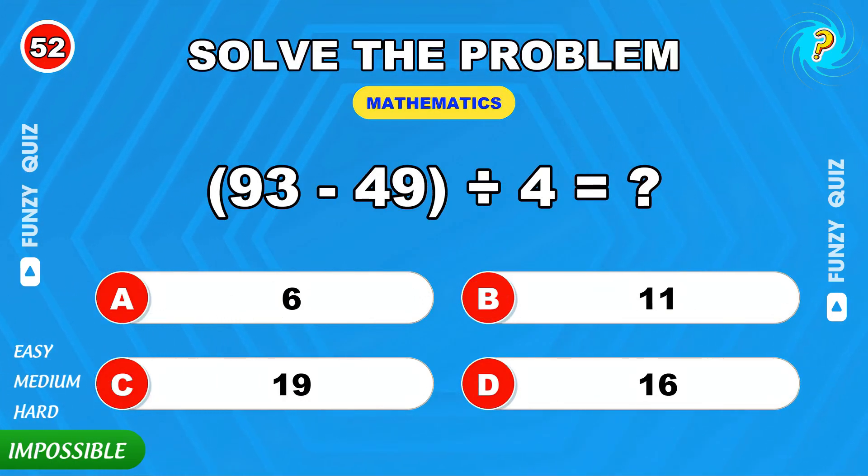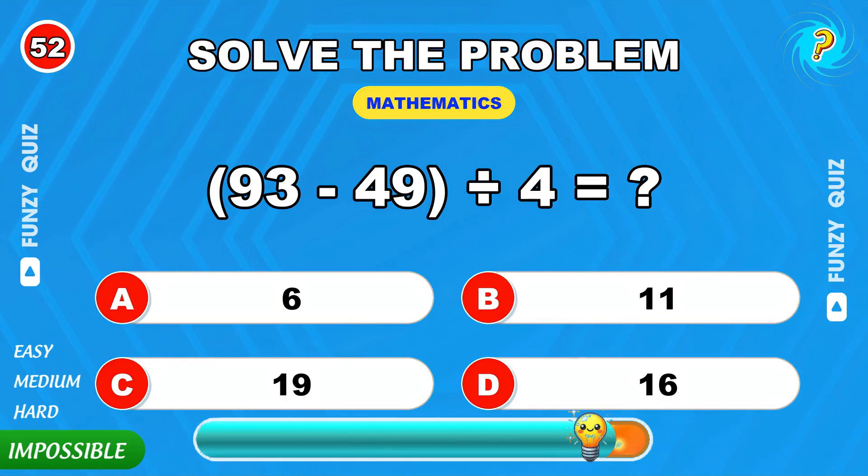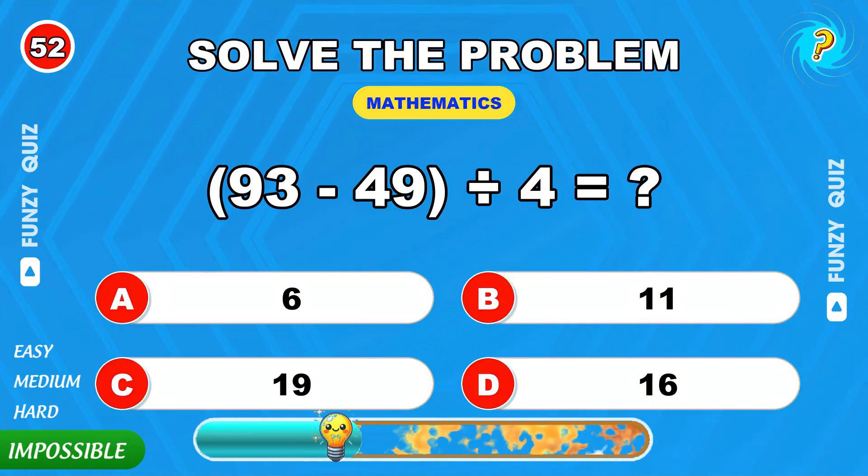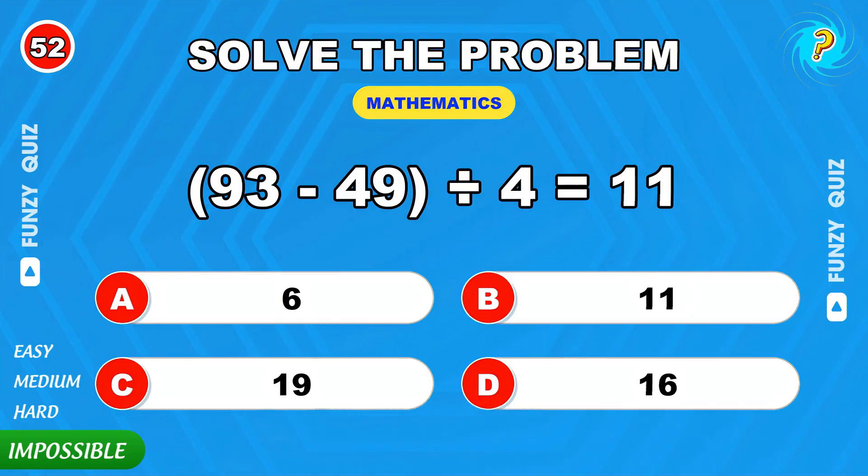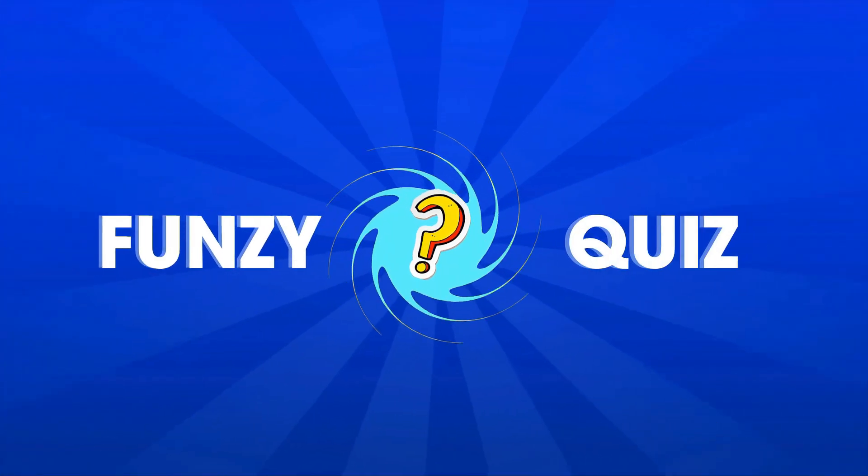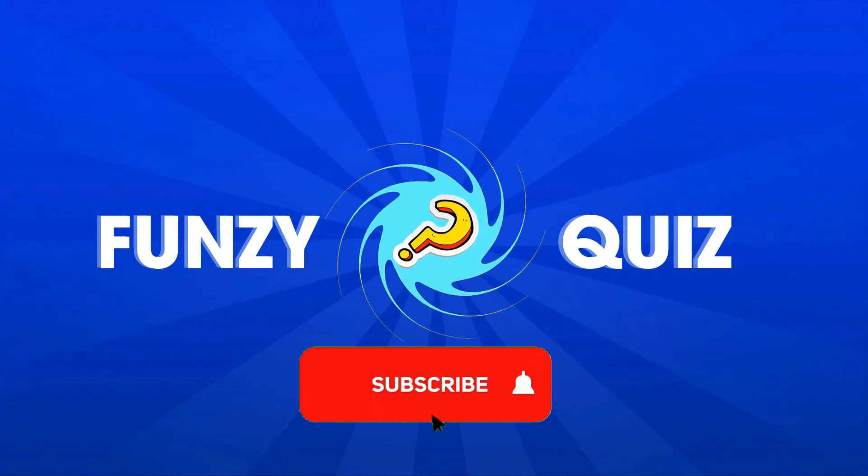Final challenge. 93 minus 49 divided by 4. 11. Amazing work. Don't forget to like and subscribe.